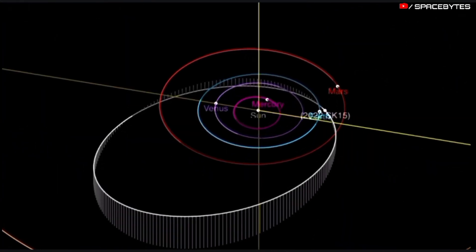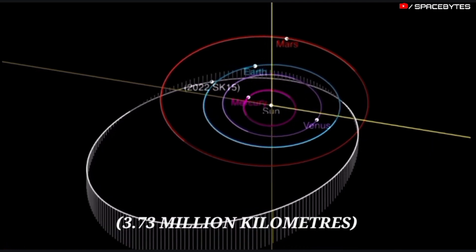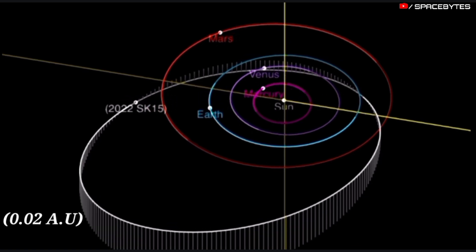The distance of Asteroid 2022 SK-15 from Earth is currently 3.73 million kilometers, equivalent to 0.02 astronomical units.